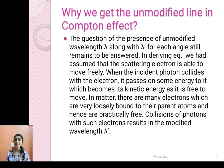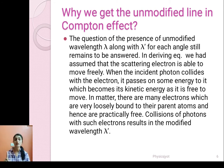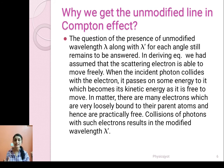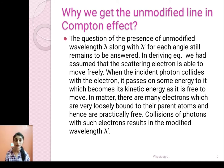In deriving the equation for Compton effect, we assumed something. We assumed that the scattering electron is able to move freely — we call that electron a free electron. When the incident photon collides with the electron, it passes on some energy to it, which becomes the kinetic energy of the electron.